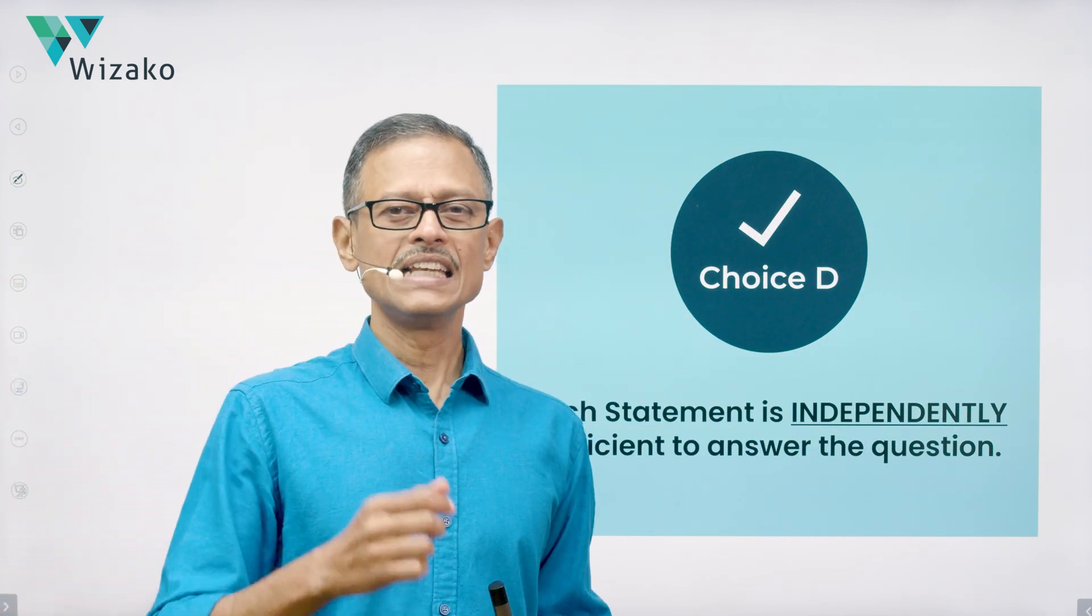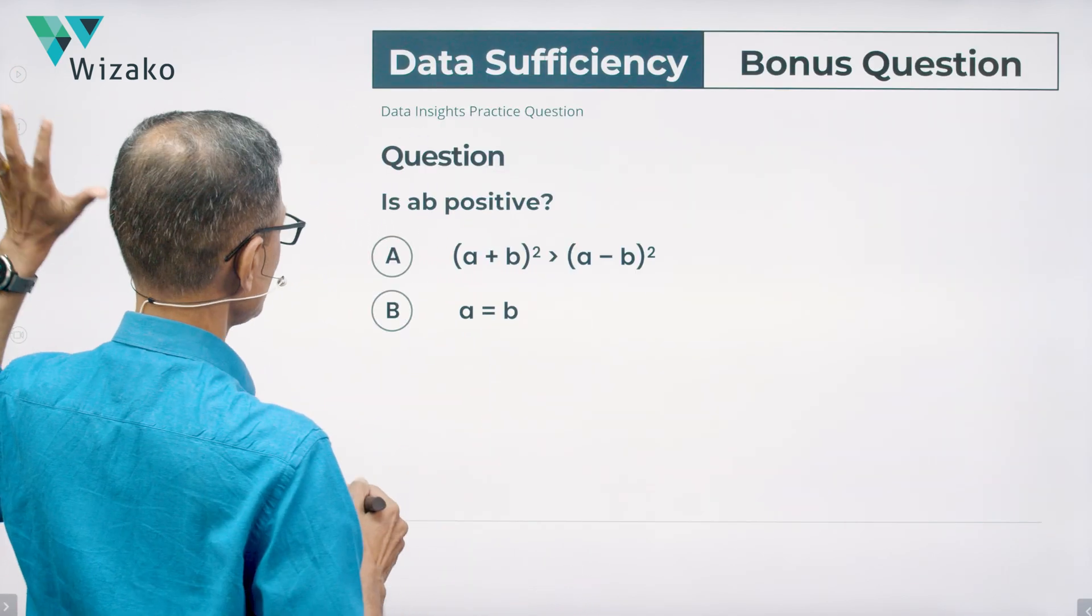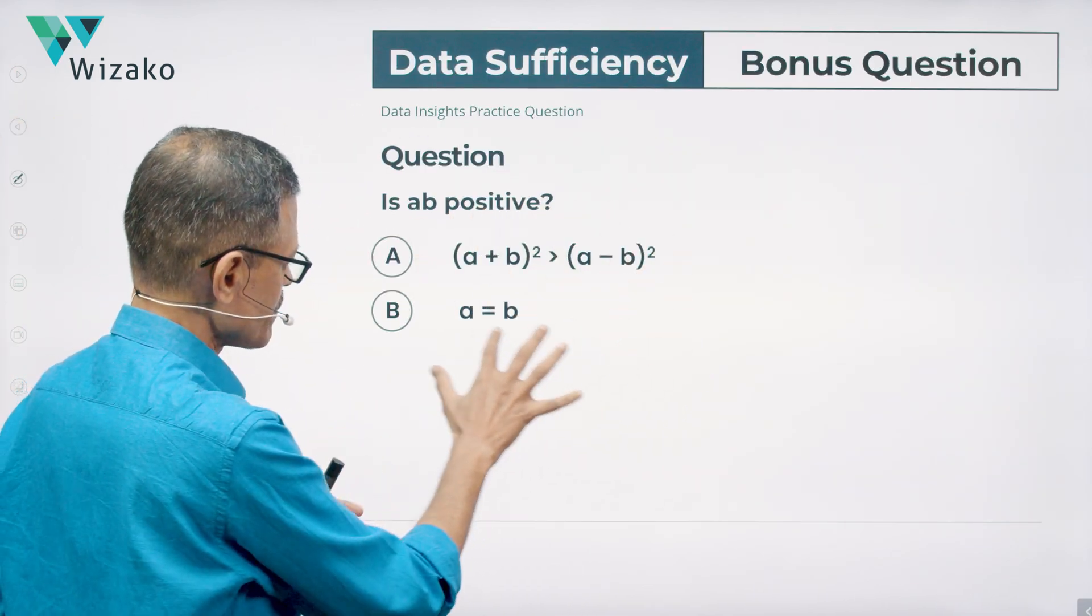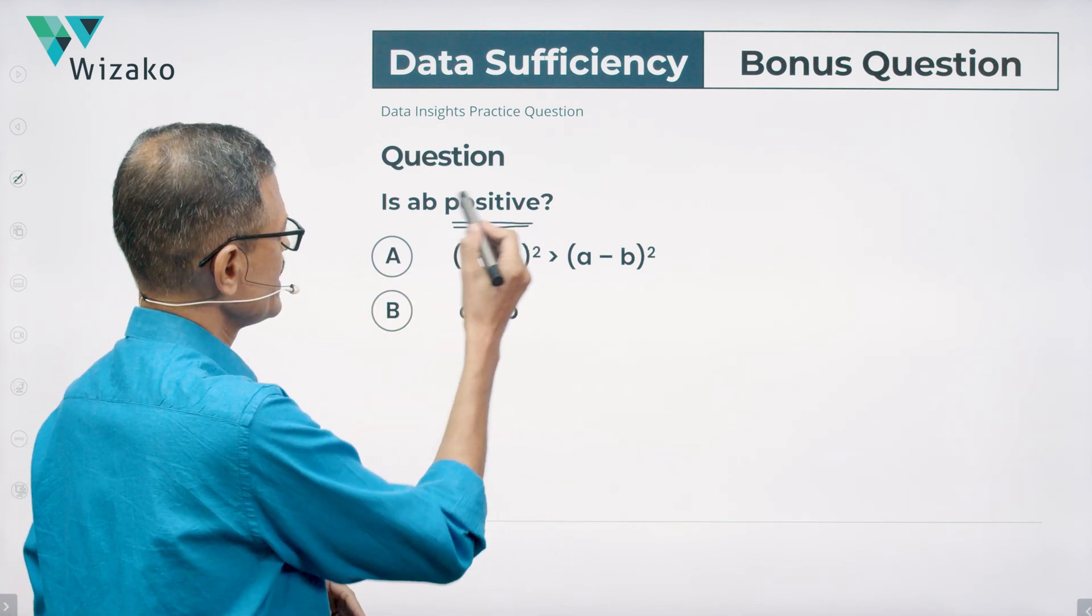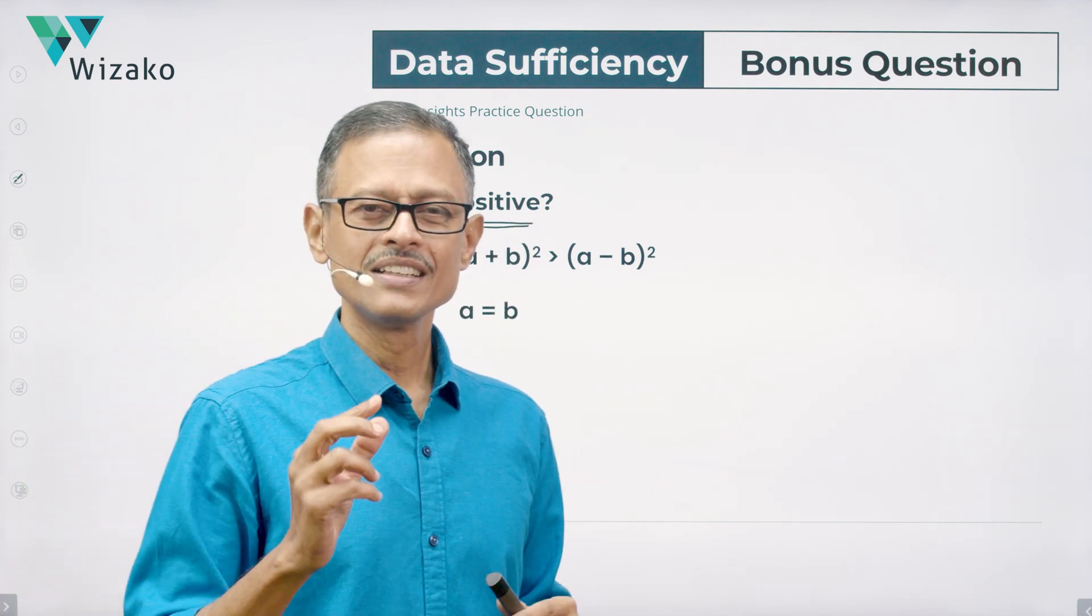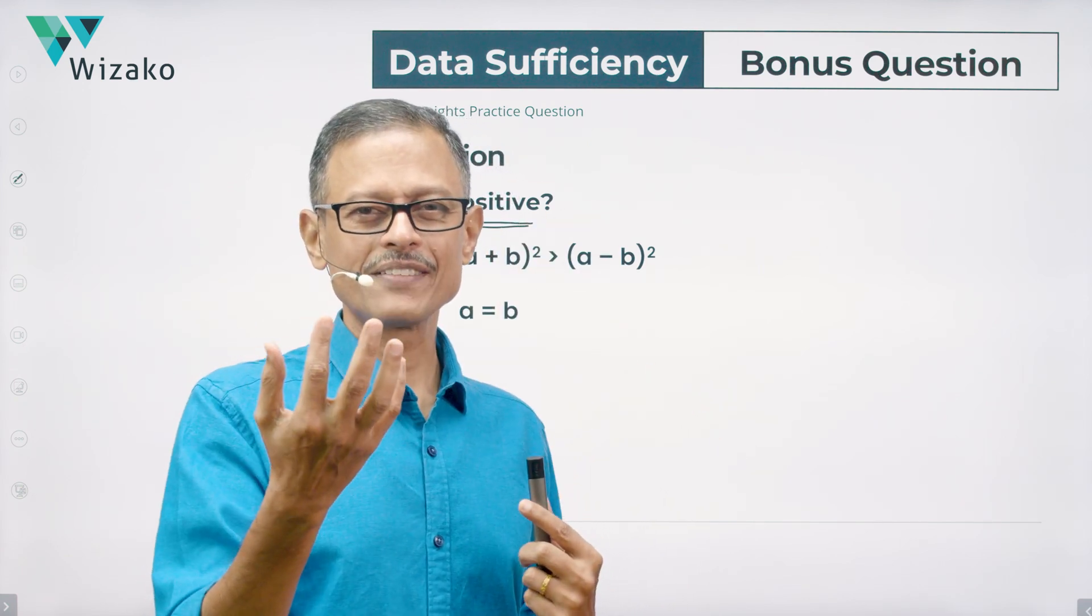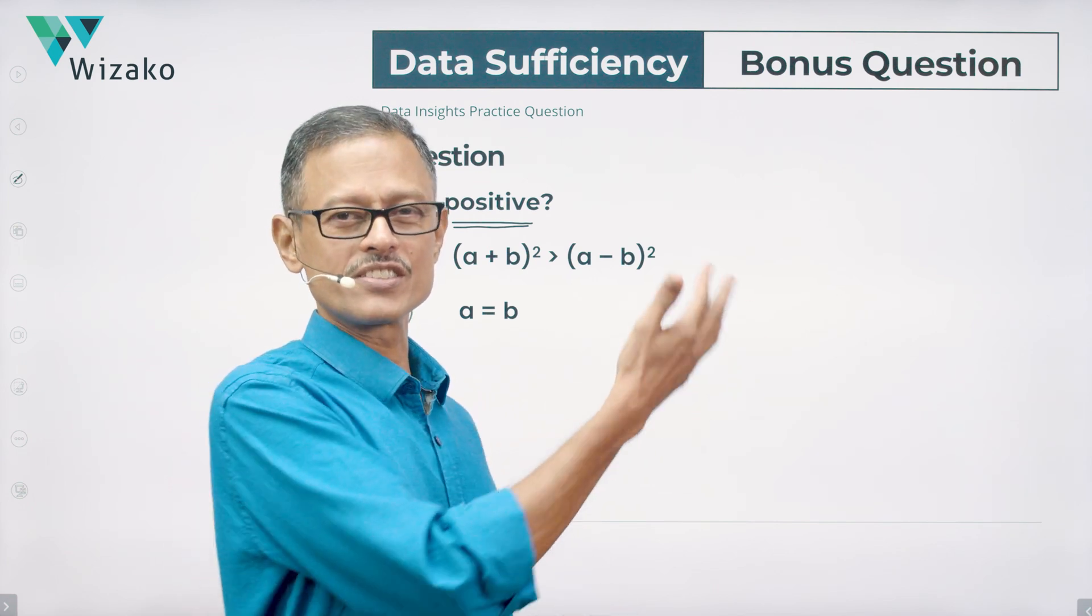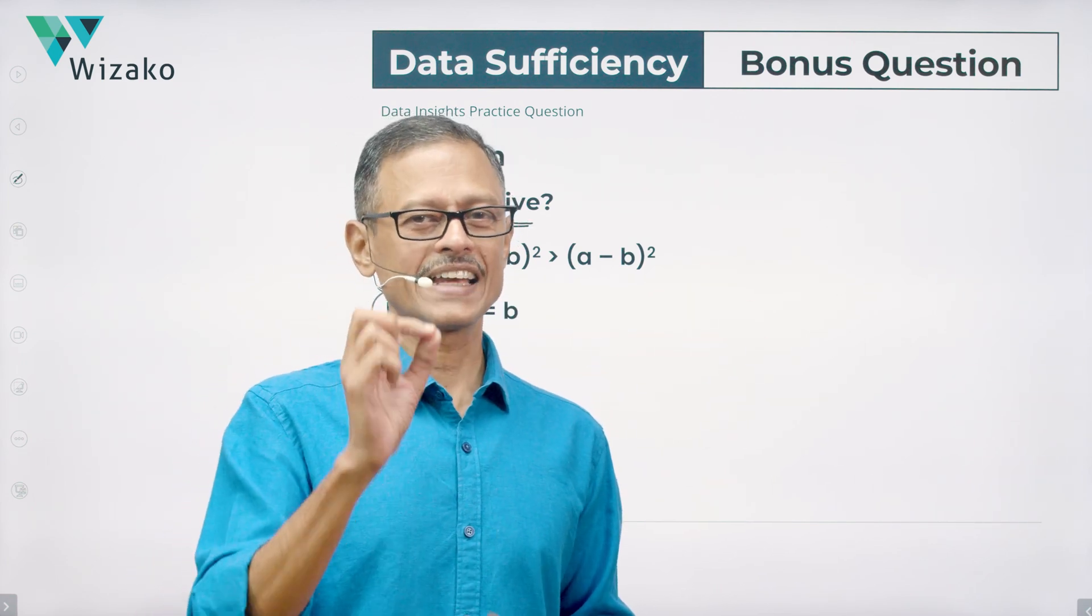As always, I'll leave you with a question, which is a bonus question. Just a slight tweak to this question. I've retained the statements as it is. I've not changed the statements. Just change this a little bit. I said, is AB positive? Before you shrug off saying that, hey, that last question was, is AB negative? Is AB positive this question? How can anything be different to this? Check out, are you going to get the same answer? Or do you have to tread carefully?